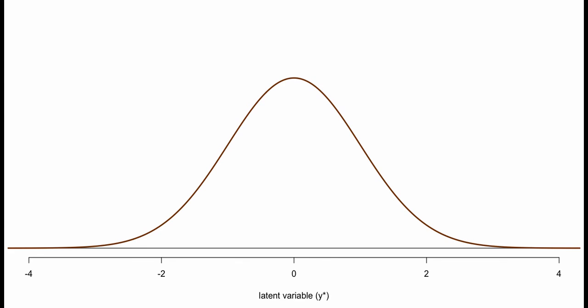To introduce probit regression, we need to introduce the concept of the latent variable. We imagine a variable y* that we can't observe, and because we can't see it, we can assume interesting things about it — for example, that it follows a normal distribution.